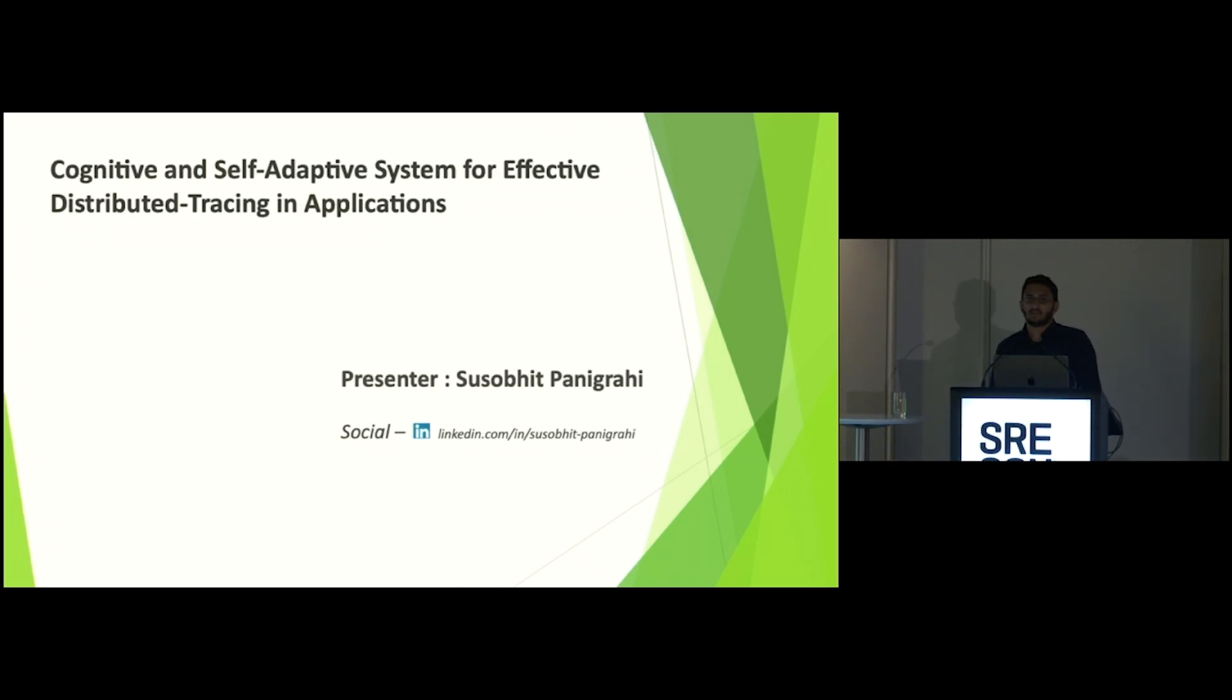So you must be aware, like today, the distributed tracing mainly are based on the Google's Dapper implementation, and the implementations primarily, the important ones being Zipkin and Jaeger. So based on these, most of today's implementations of distributed tracing are present.